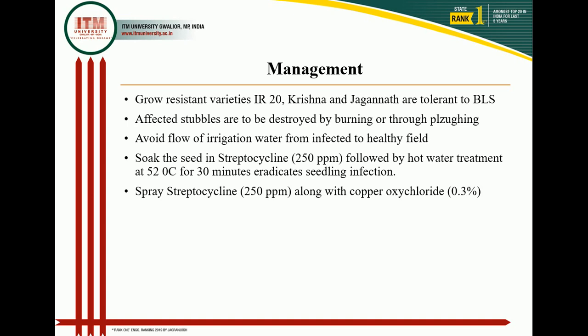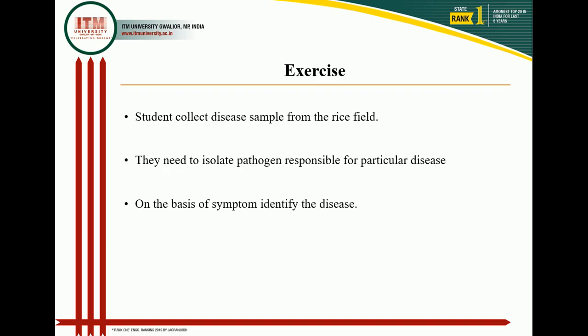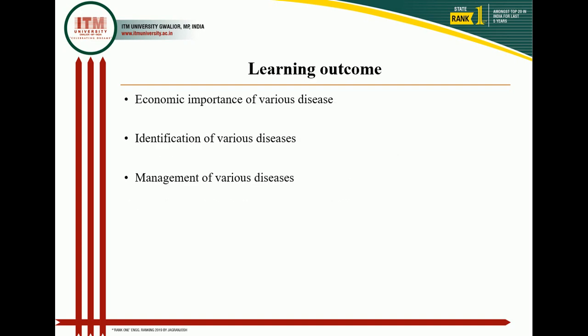Today's lecture covered rice false smut, bacterial leaf blight, and bacterial leaf streak. Exercise: students should collect a disease sample from the rice field, make a herbarium, observe under the microscope by preparing slides, isolate the pathogen, and identify the diseases on the basis of symptoms. Learning outcomes: understand the economic importance, symptoms, favorable conditions, disease cycle, and management of these three diseases, and identify diseases on the basis of symptoms.